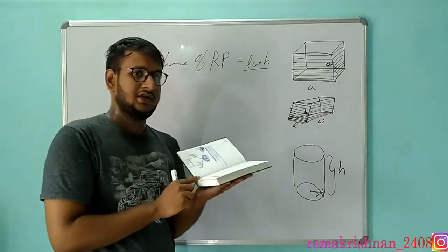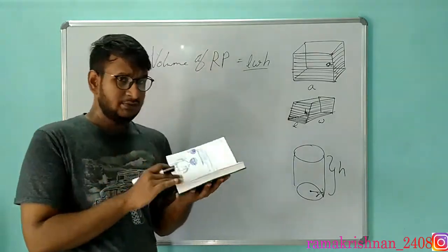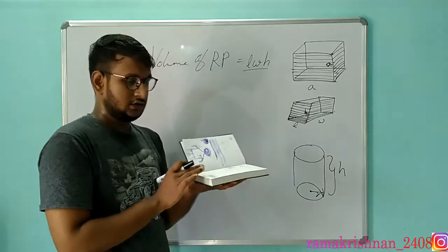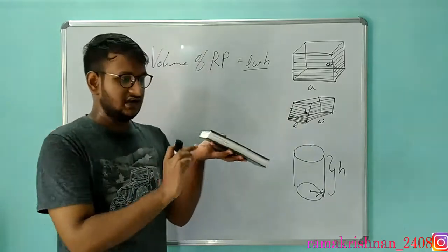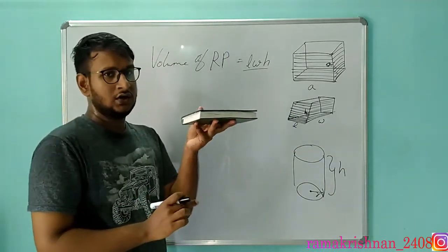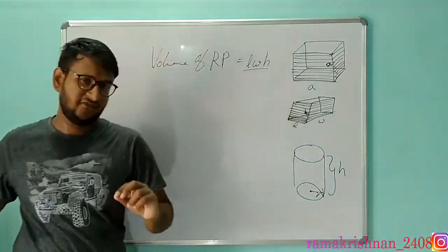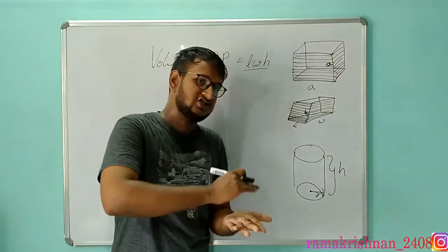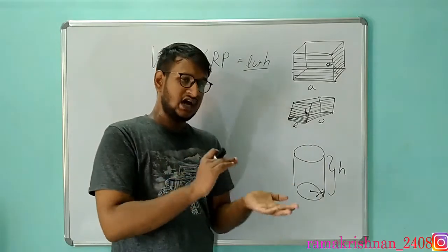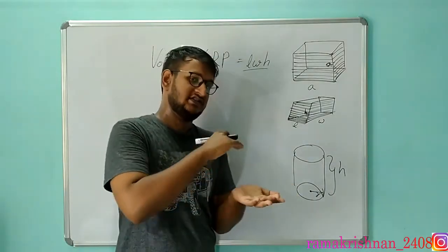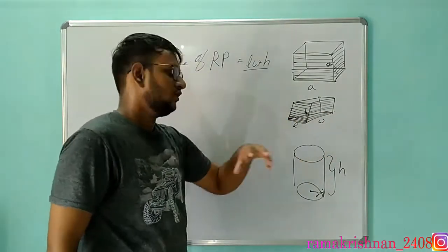If you want to cut this one, it's a two-dimensional figure — a rectangular shape. This is the area: length into breadth. And breadth into height, b into h. If you want to cut a particular amount of paper, it's a rectangular prism. If you cut a two-dimensional square, it becomes a three-dimensional cube. If you cut a two-dimensional rectangle, it becomes a rectangular prism. That's the same concept.